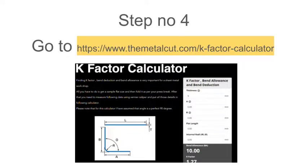Step number four: note down all those details and go to the website I'm pointing to, and input all the details you are getting from the folding. Make sure you measure everything with your Vernier caliper so you have a very accurate result. Otherwise you will have a reading mismatch and the k-factor you are looking for would not be very accurate.